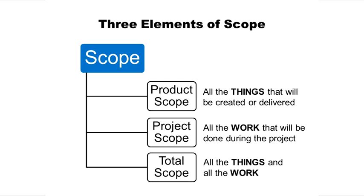Quite often people talk about the product scope without realizing there's a whole lot of work that has to happen to make those things come to fruition. A lot of work and money has to be spent along the way. We need to talk about the total scope of the project, and we'll be talking about the other two elements as we go through here.